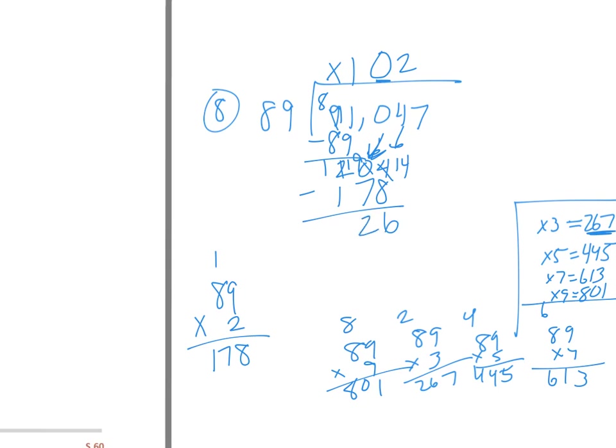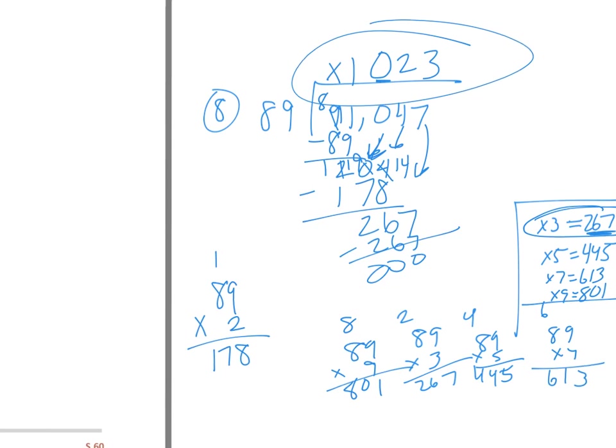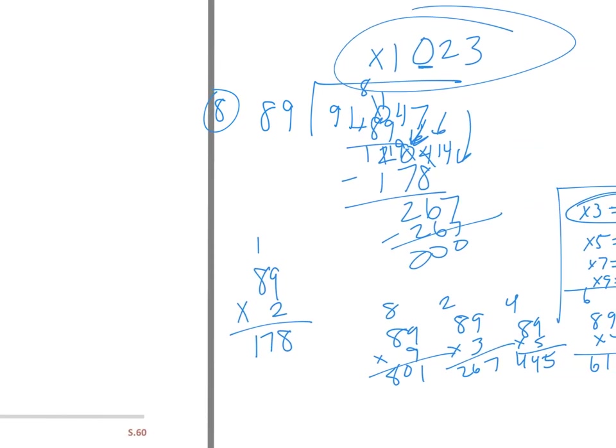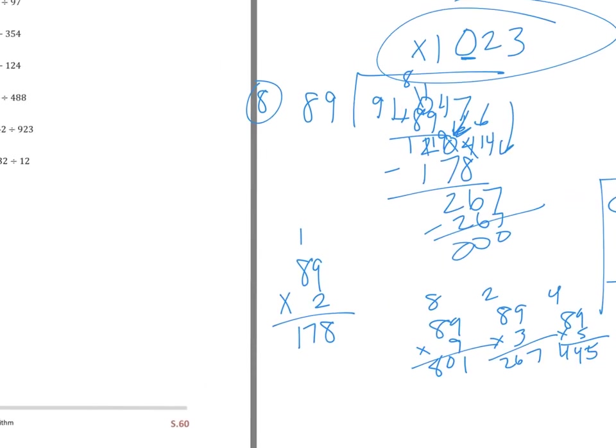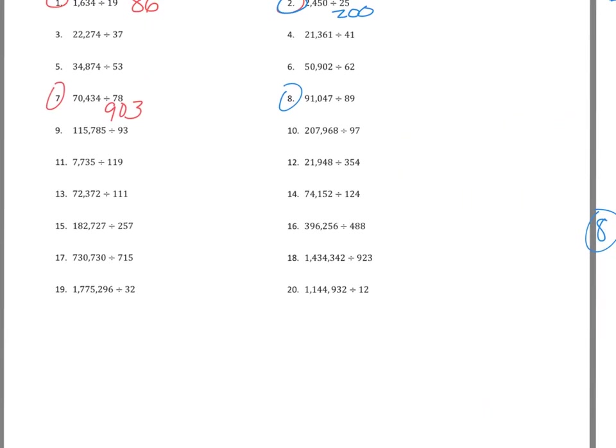And, I'm left with 26. And, now, I can bring down my 7 to get 267. And, I see it's right here times 3. So, I can subtract that off. And, I'll get my answer of 1,023. So, I'll bring that over to my answer. Or, to my sheet here. And, I missed something. There we go. I want to leave it. So, I got my answer of 1,023.